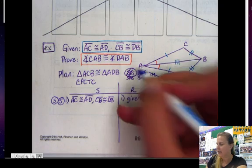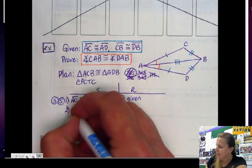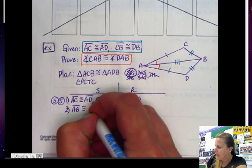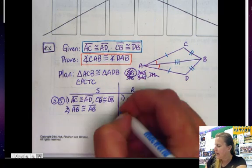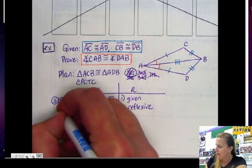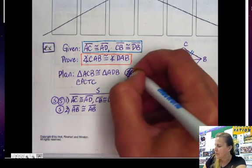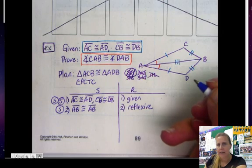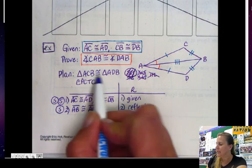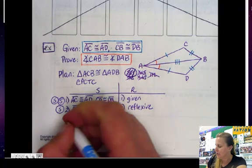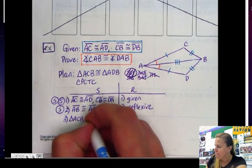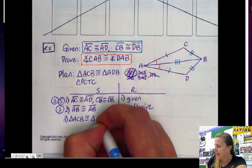Notice I haven't done that yet. So that'll be my second step, is AB is congruent to AB. They share that side. And my reason is reflexive. So there's my third side, and so I can cross that off my plan. So now I have side-side-side is done.